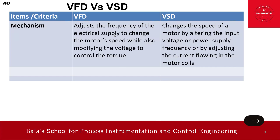Regarding mechanism: a VFD adjusts the frequency of the electric supply to change the motor speed, while also modifying the voltage to control the torque. A VSD changes the speed of the motor by altering the input voltage, supply frequency, or by adjusting the current flow in the motor coils.